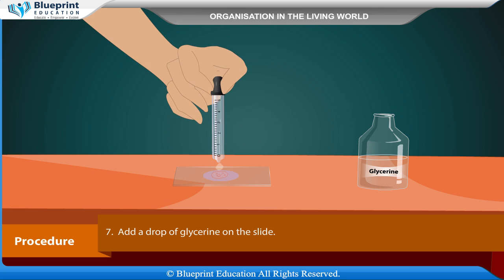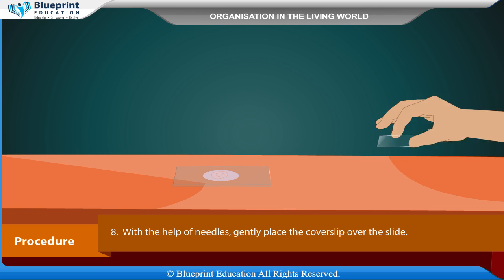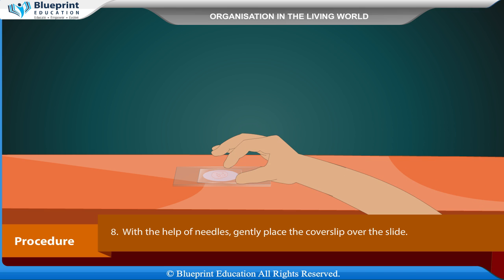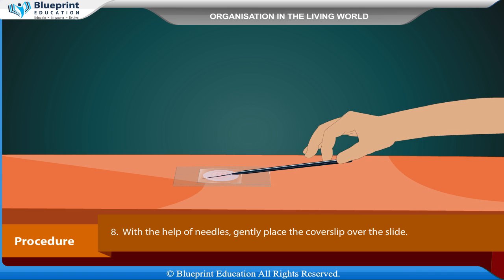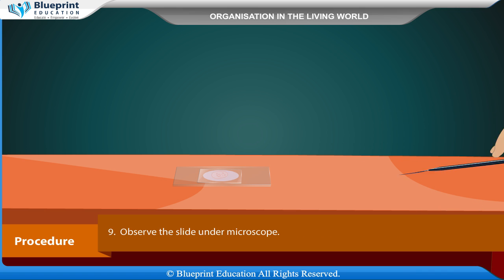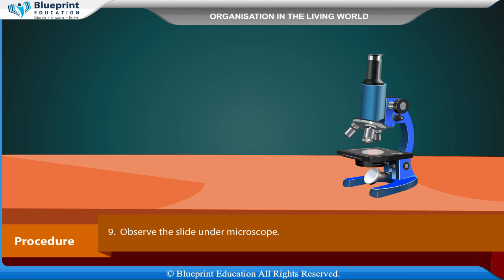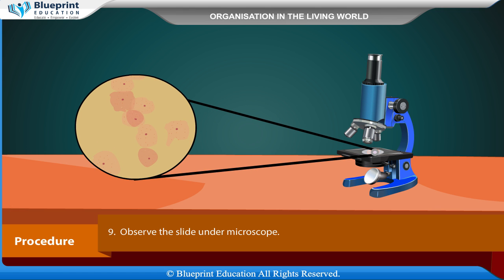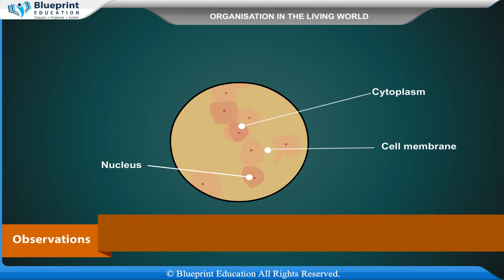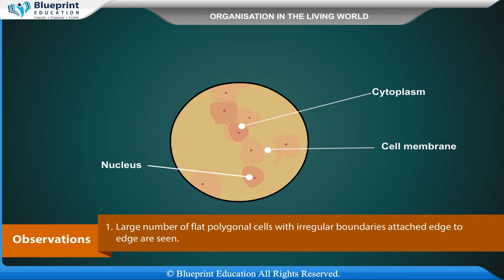Add a drop of glycerine on the slide. With the help of needles, gently place the cover slip over the slide. Observe the slide under the microscope. Observations: A large number of flat polygonal cells with irregular boundaries attached edge to edge are seen.